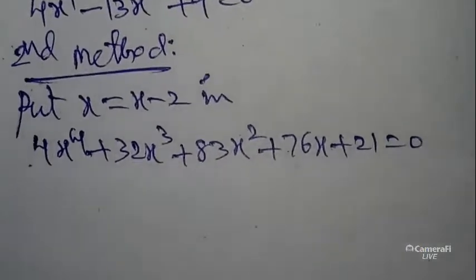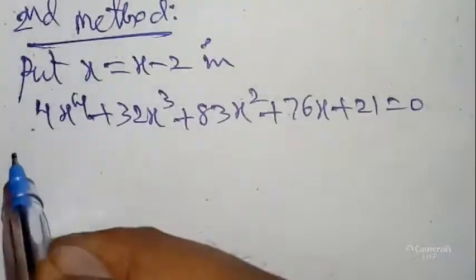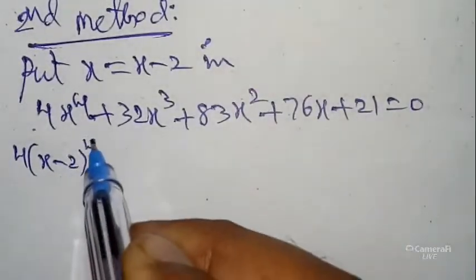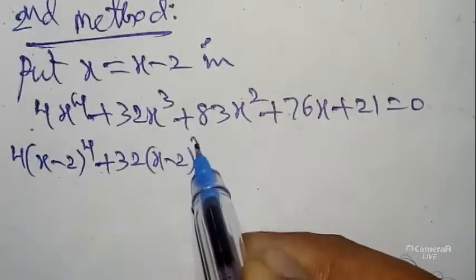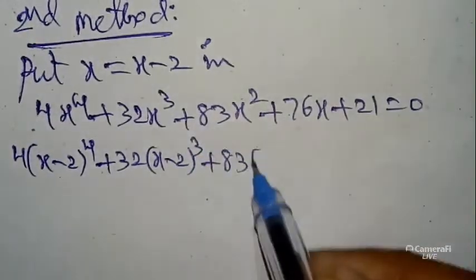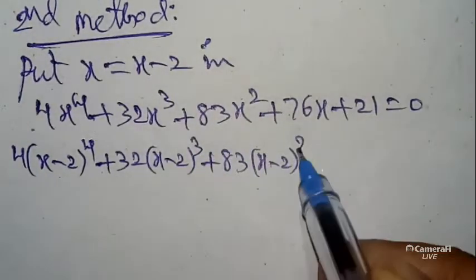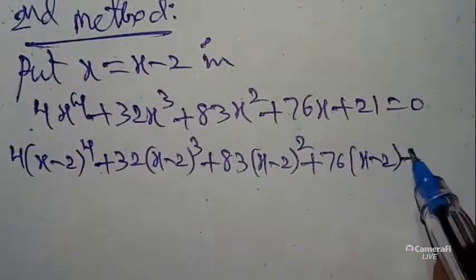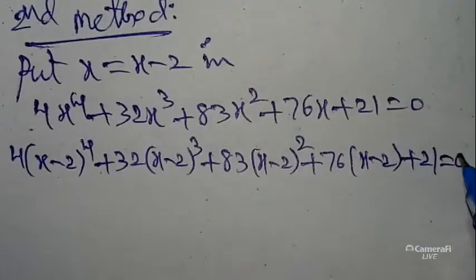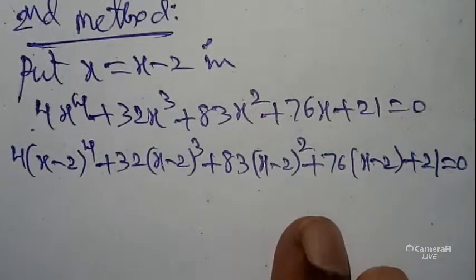4x⁴ + 32x³ + 83x² + 76x + 21 = 0. Substitute x = x - 2, we get 4(x - 2)⁴ + 32(x - 2)³ + 83(x - 2)² + 76(x - 2) + 21 = 0.